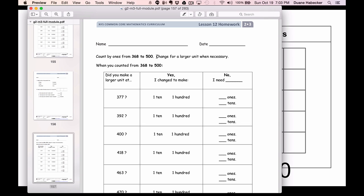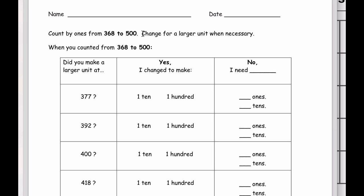And so the idea would be students are going to be counting from 368 to 500. And as they're going, they're going to try and be conscious and aware of any time that they have reached a landmark number and are having to regroup and change for a larger unit. For example, as they start at 368, so they're going to say 368, 369, 370. And at 370, that's when they need to be aware, I've just cached in for a larger unit.